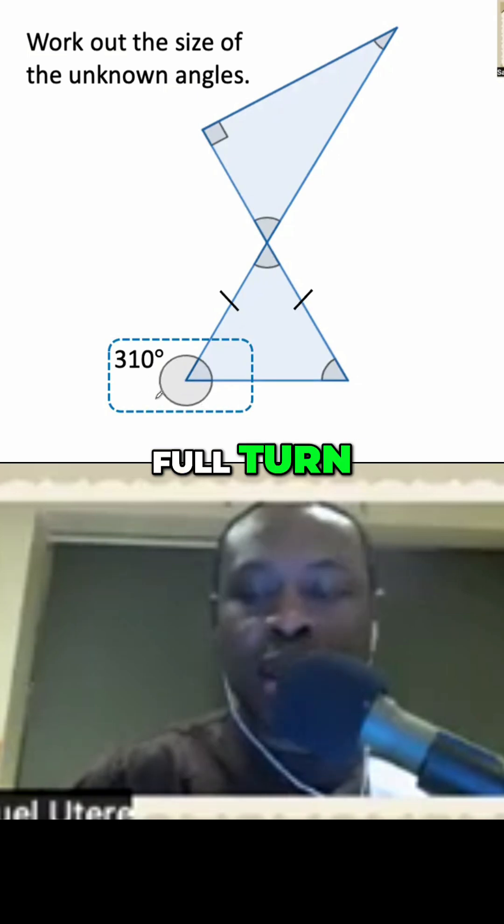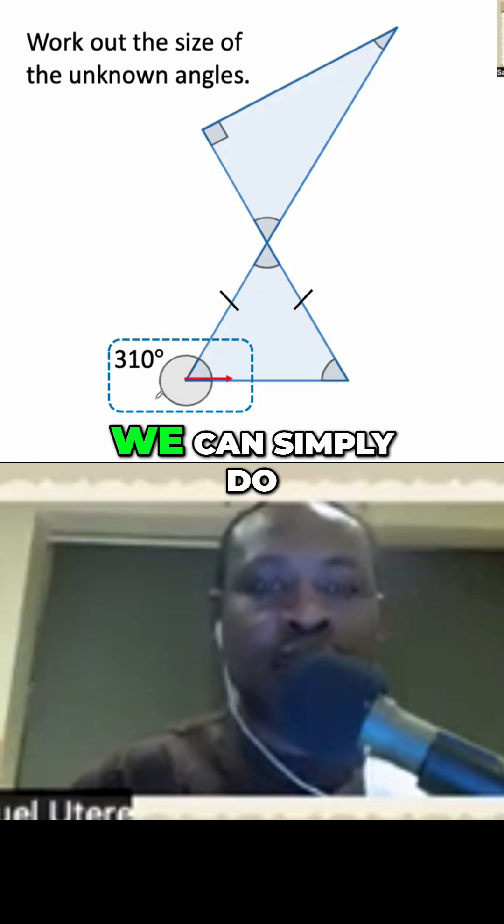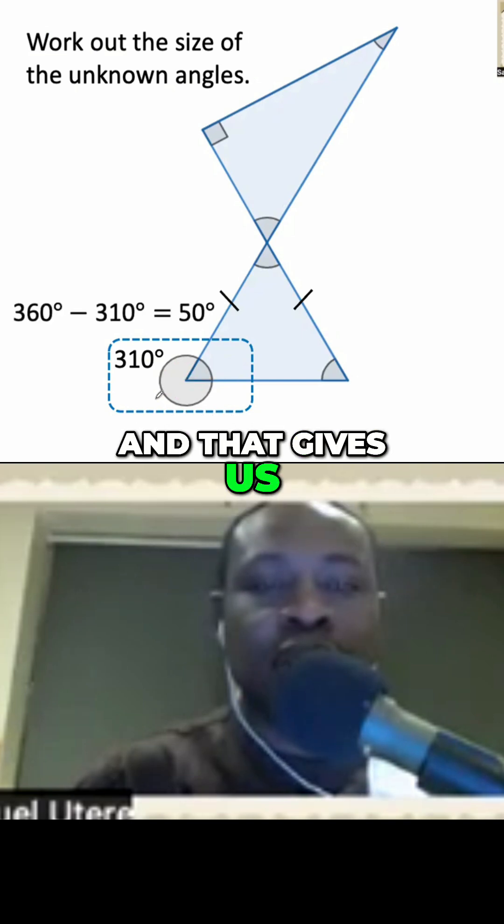We know that a full turn is 360 degrees. So to get the missing angle, we can simply do 360 degrees minus 310 degrees, and that gives us 50 degrees.